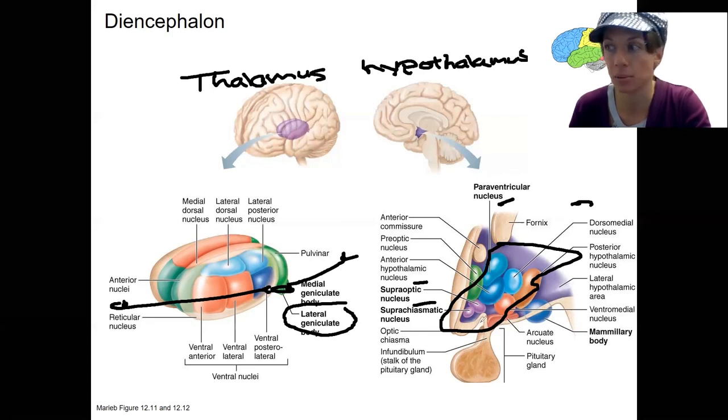Overall, hypothalamus controls autonomic nervous system, body temperature, food intake, and then these pituitary hormones, which have a bazillion million different awesome functions.